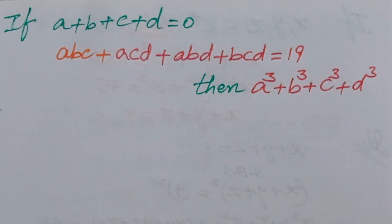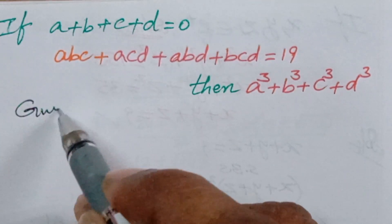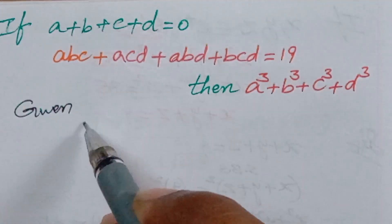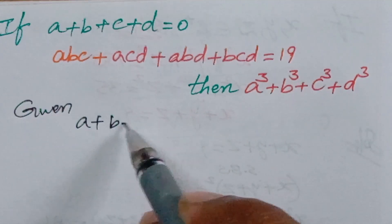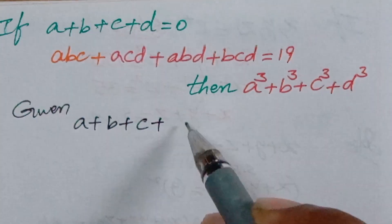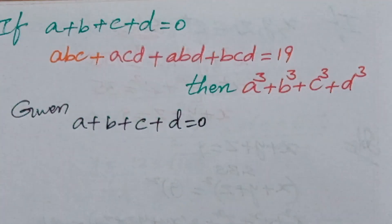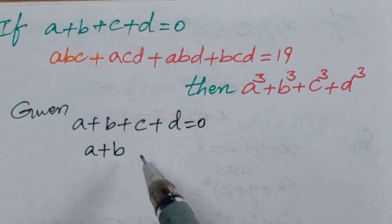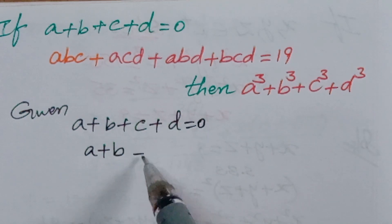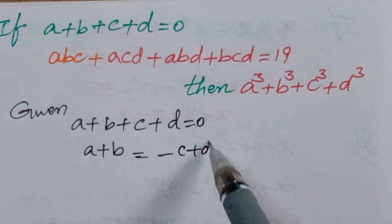So how to solve this problem? First of all, what is given: a + b + c + d = 0. I am splitting it into two terms: a + b = −(c + d).